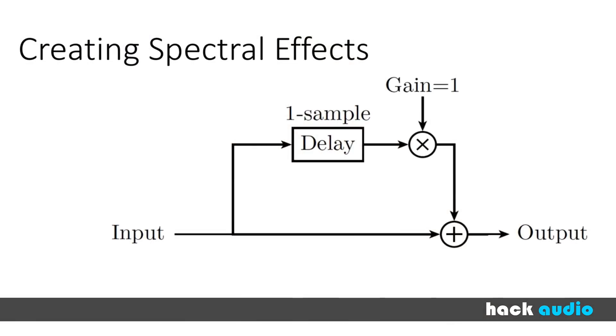One way to create a basic low-pass filter is to use parallel processing, where one path is our dry input signal, and our parallel path introduces one sample of delay. For low frequencies, when we combine these two paths together, we're going to create constructive interference. But for high frequencies, when we add these two paths together, it actually creates destructive interference to reduce the amplitude of the high frequencies.